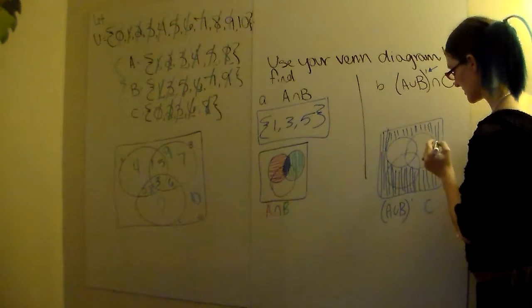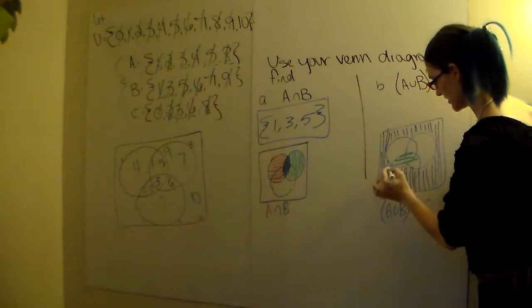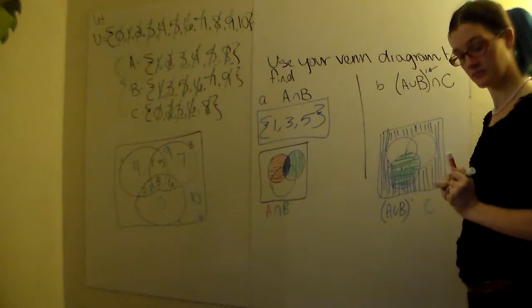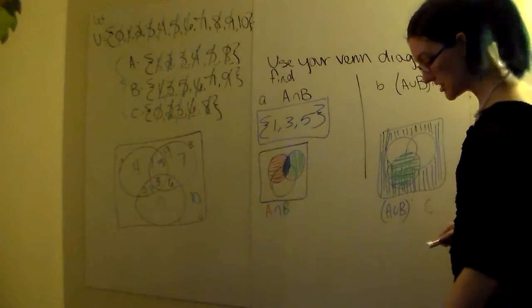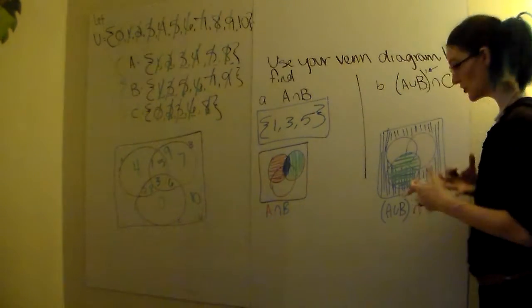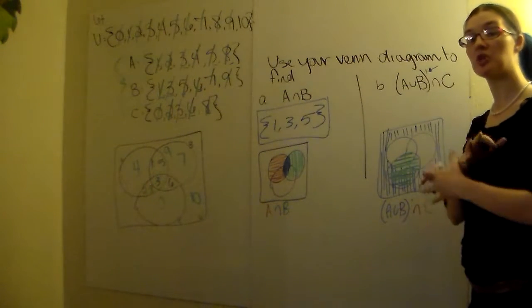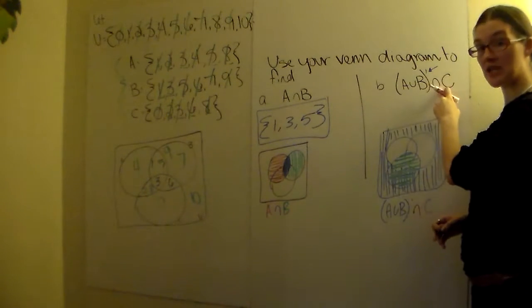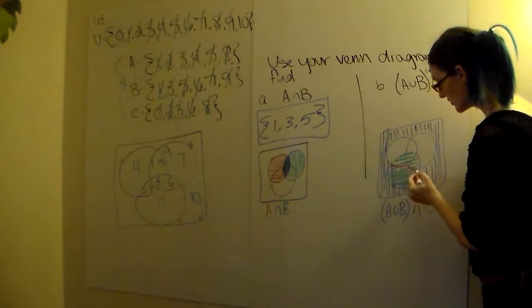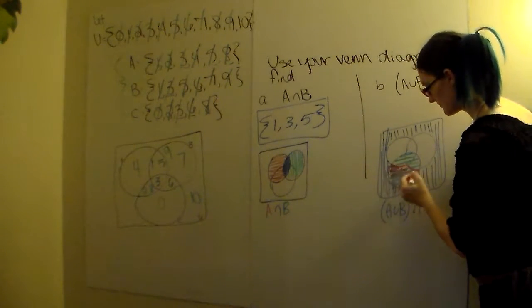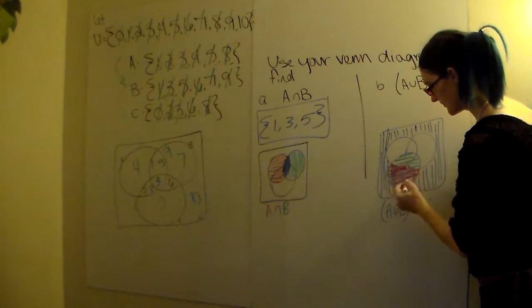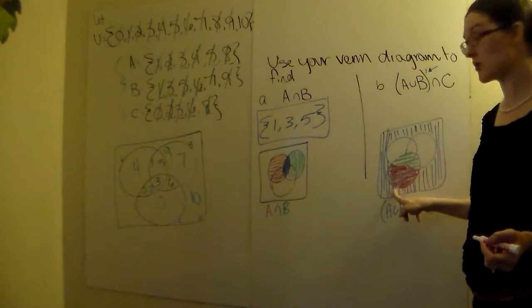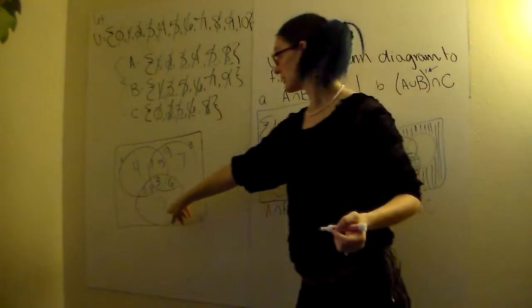And we're going to pair that with C. C is this entire circle down here. And then we want the intersection. The intersection is going to be only what is double shaded. Again, if it were the union, you would include everything that has been shaded, whether it's double shaded or not. But we want the intersection so that is only the double shading. And it's only going to be this bottom portion of C. It's the only part that's included. So then you're going to look back at your Venn diagram with the numbers and say what numbers were in that bottom portion of C.